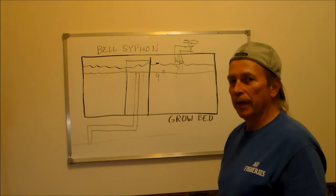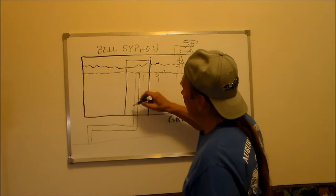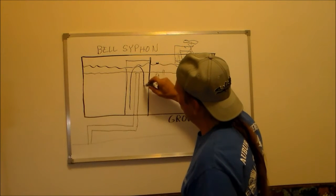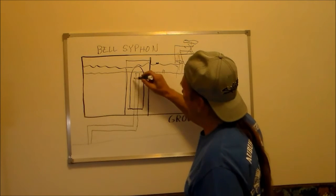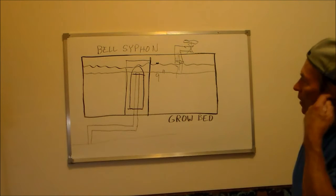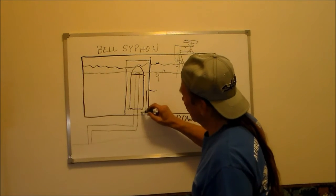Now what you want to do is create a siphon. The way to create a siphon is you have to trap the water in here. So we put what's called the bell. This will be a piece of tubing with a cap on the end of it.